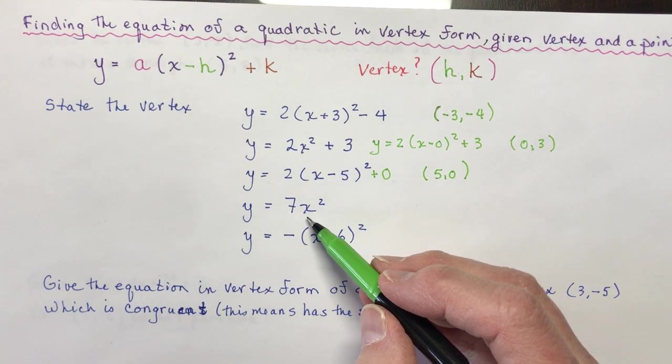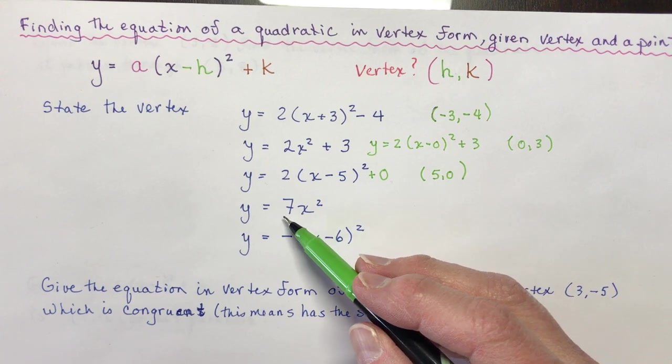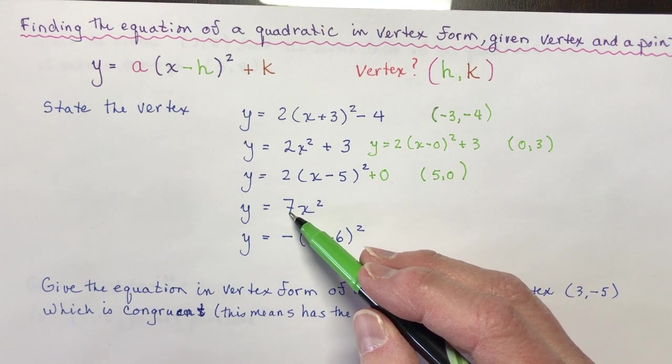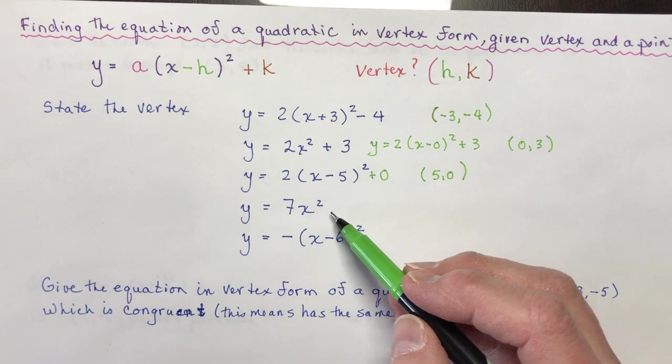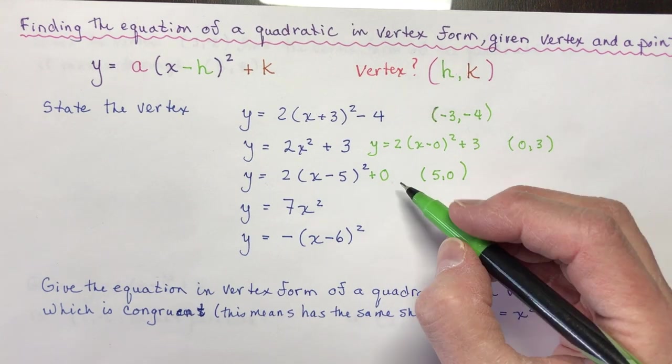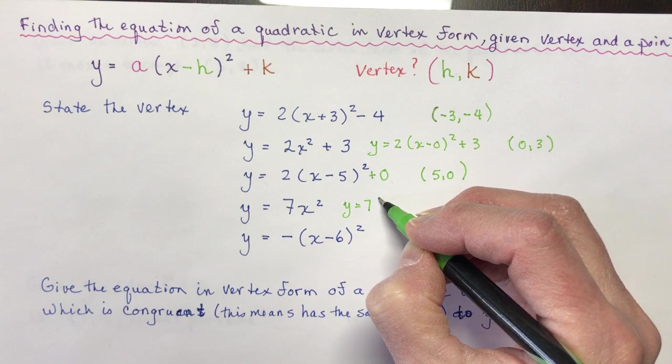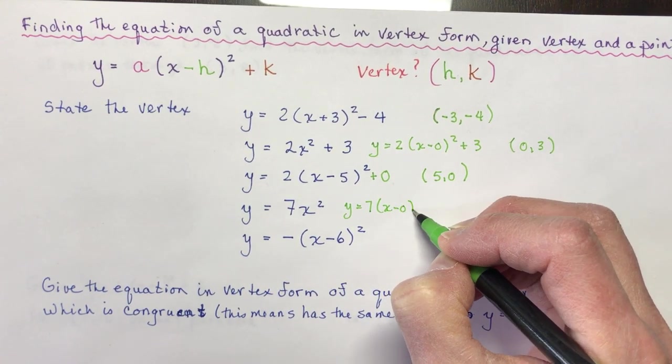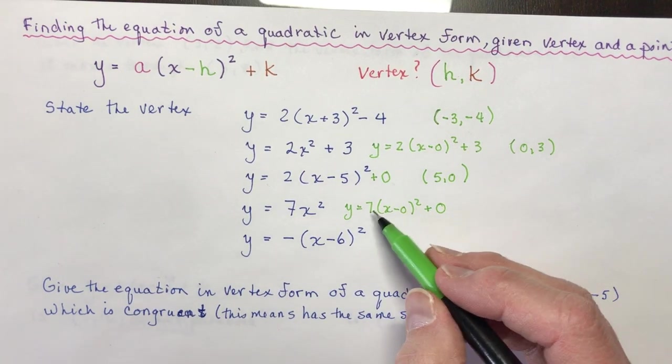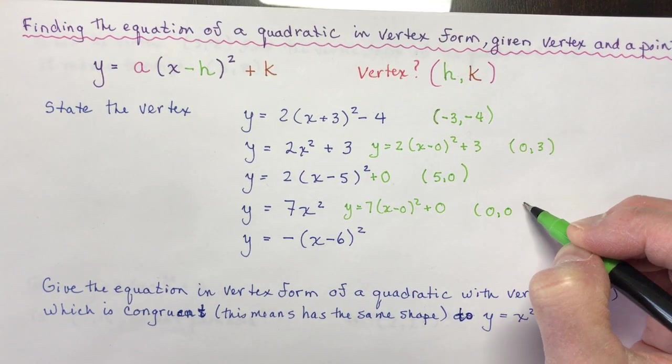And this equation here, well, that's just x squared times 7. So 7x squared. It has a vertical stretch by a factor of 7, but it wasn't shifted left or right, up or down. So this would be like me writing 7(x minus 0) squared plus 0. Okay, so that would get you right back to that equation. And therefore, the vertex is still 0, 0.